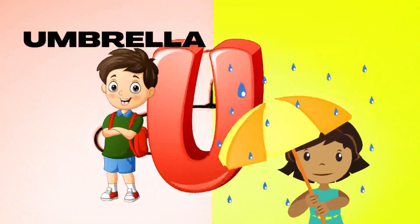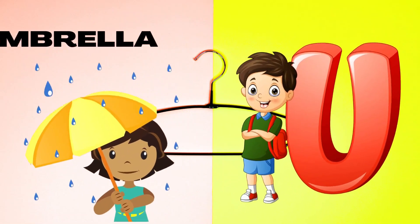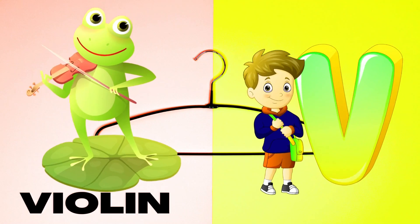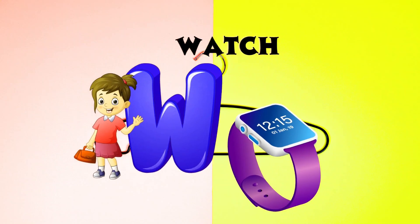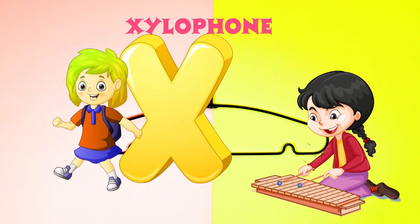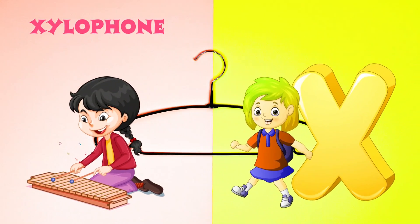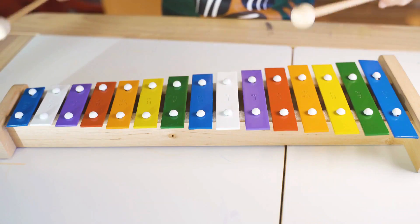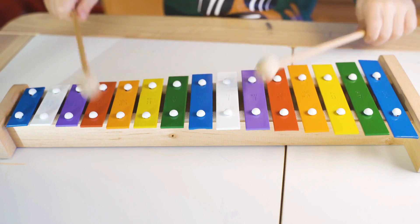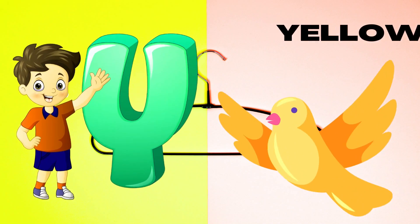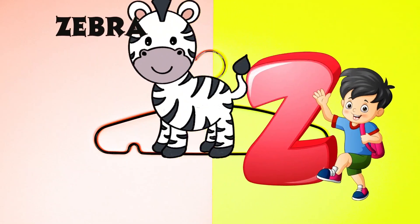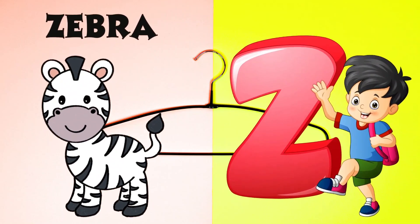U is for Umbrella, U-U-Umbrella. V is for Violin, V-V-Violin. W is for Watch, W-W-Watch. X is for Xylophone, X-X-Xylophone. Y is for Yellow, Y-Y-Yellow. Z is for Zebra, Z-Z-Zebra.